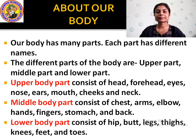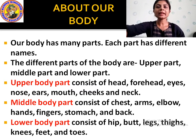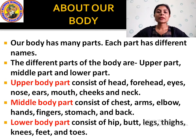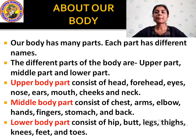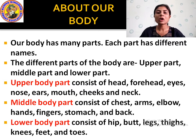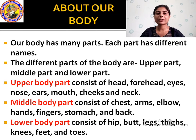The lower body part consists of hip, butt, legs, thighs, knees, feet, and toes. The upper part of the leg is called the thighs. So our body parts are divided into three parts — upper, middle, and lower — and each section has its own distinct parts.